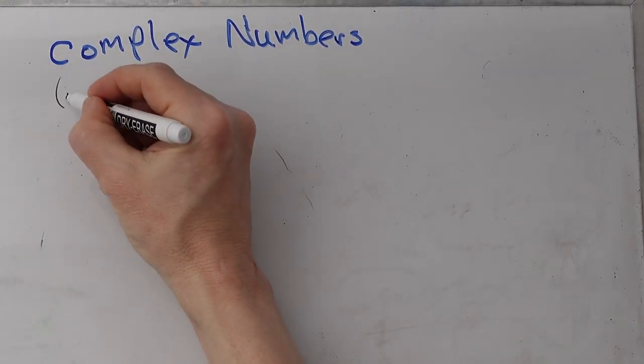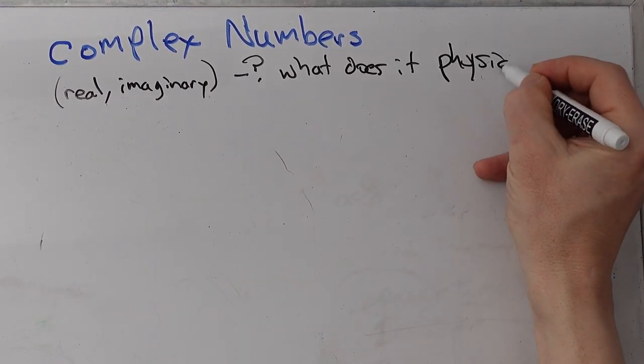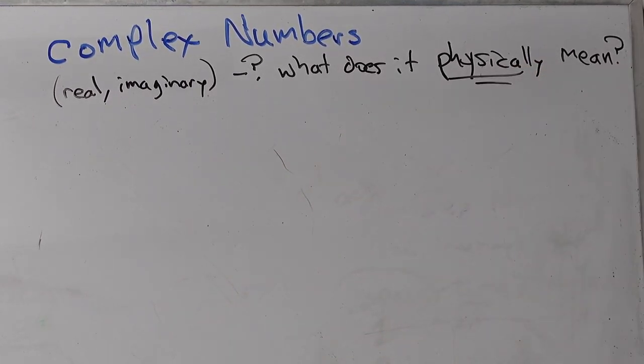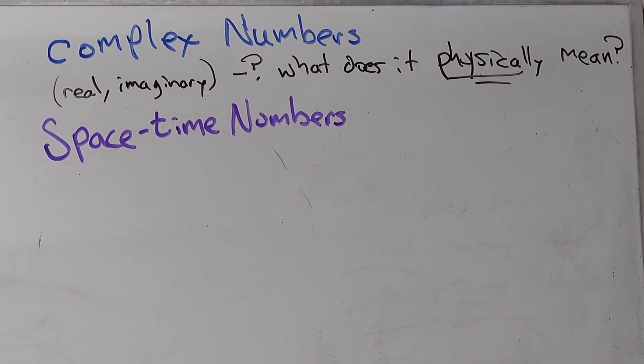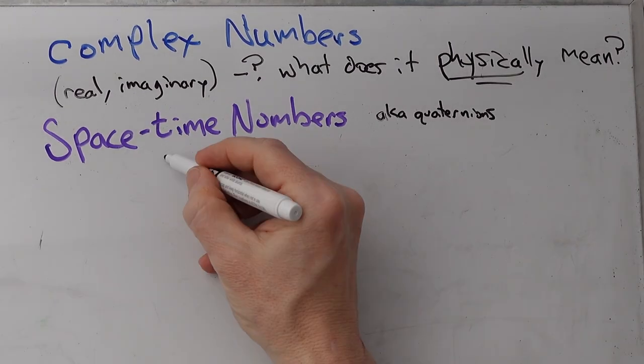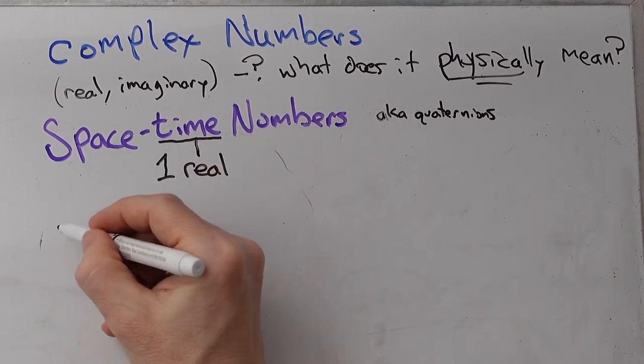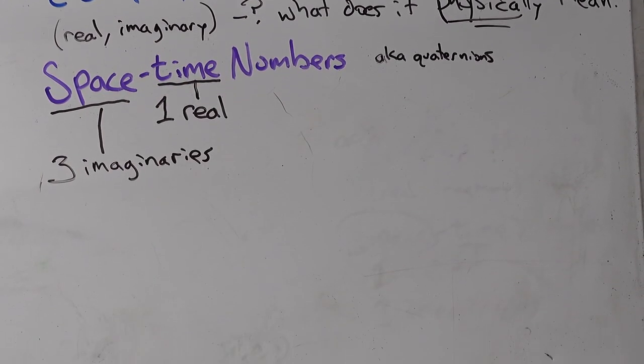So complex numbers, used all the time in quantum mechanics. It's got a real imaginary. But what does it physically mean? Well, with space-time numbers, which is a slight generalization, a.k.a. quaternions, I know what that means. Time, there's one of them, and it's a real number. And there are three space terms.